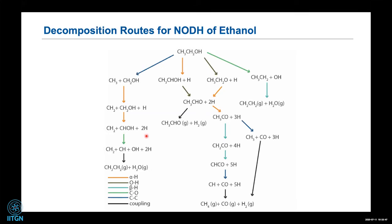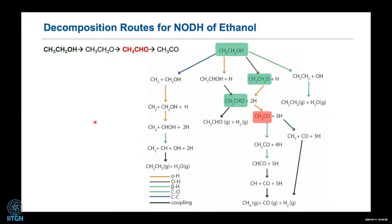We built our model with more than 50 reactions covering the entire network. Starting with all possibilities, ethanol on the catalyst surface may go through α O–H bond scission to make CH₃CH₂O, C–O bond scission to make CH₃CH₂, α C–H bond scission to make CH₃CHOH, or β C–C bond scission making CH₃ plus CH₂O. We consider all such possibilities and develop a reaction network of more than 50 steps written for surface reactions.